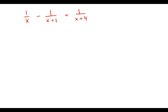If 1 over x minus 1 over x plus 1 equals 1 over x plus 4, then x could be which of the following?